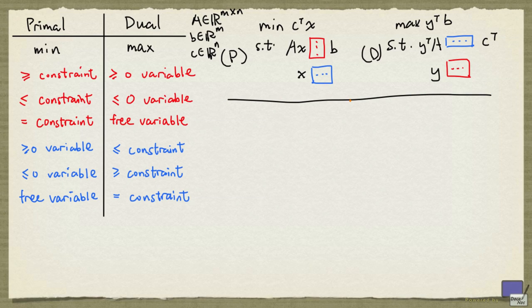We call that this picture here encapsulates the definition of the dual problem of a general linear programming problem that is a minimization problem. The way to complete this picture is given by this table here.